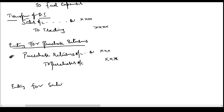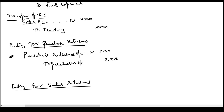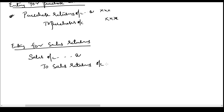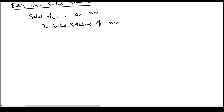Then the entry for sales returns. Sales returns account shows a debit balance because it is an expense for the business. To close the sales returns account we would have to credit it, and we would have to debit it to the sales account. Sales account is debited and sales returns account is credited. Sales returns account shows a debit balance — to close it we are going to credit the account, and sales account is debited.